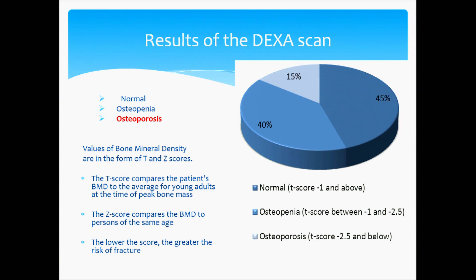We did a study of bone density in FSHD using DEXA scans, categorizing people as having normal bone density, osteopenia — which is low — or osteoporosis, which is a further decrease in bone density, making one at increased risk for fractures. Bone mineral density is scored with T-scores, which compares you to the average young adult at peak bone mass, or Z-scores, which compares you to the same age. We found that 45% of people with FSHD had normal bone density, 40% had osteopenia, and 15% had osteoporosis. This was a study of 100 people — 50 in Baltimore and 50 in Sydney, Australia.